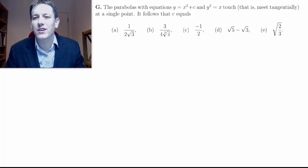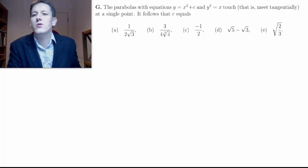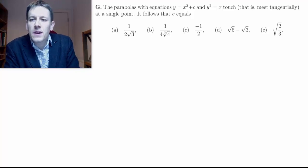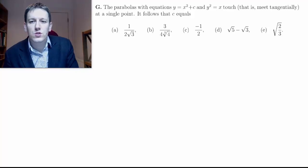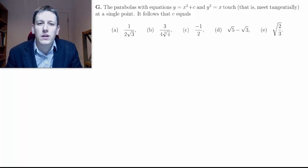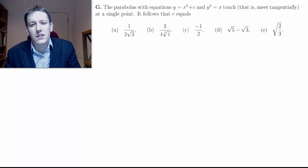Hi! In this video we're going to look at 1g from the Oxford Math Admissions Test from 2018. This one says we've got two parabolas with equations y = x² + c and y² = x, and they're going to touch at a single point. Which of the following must c be in that case?